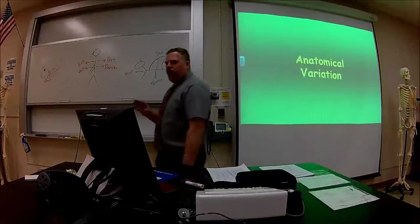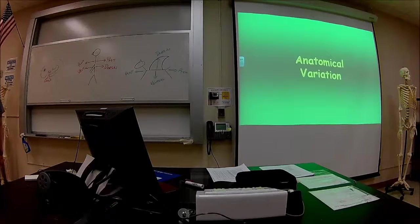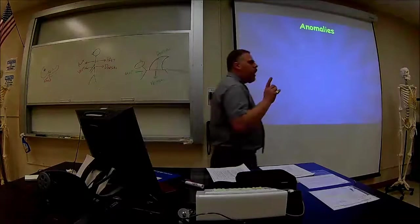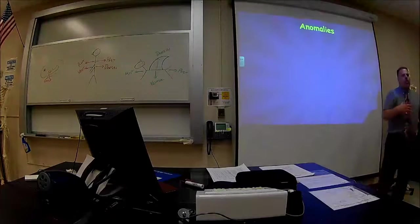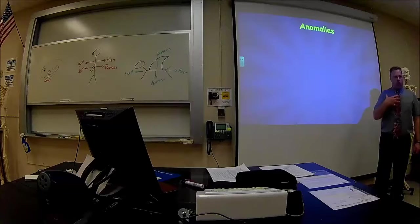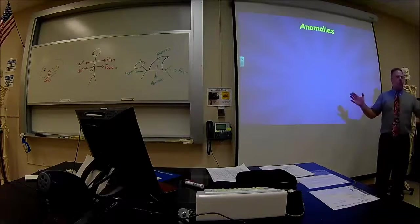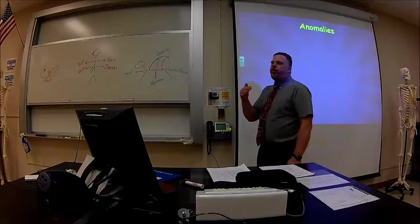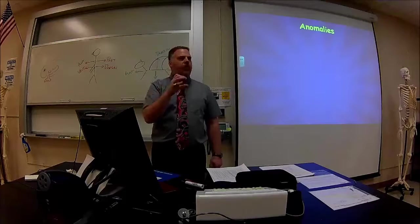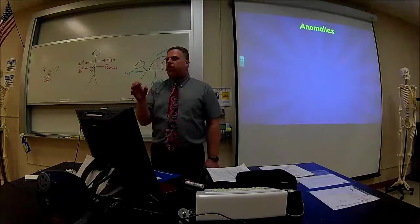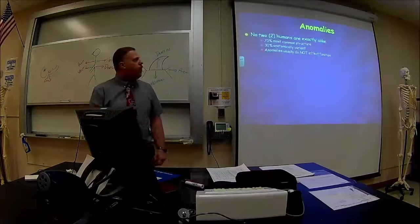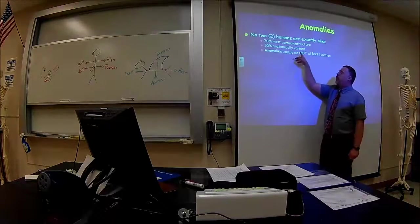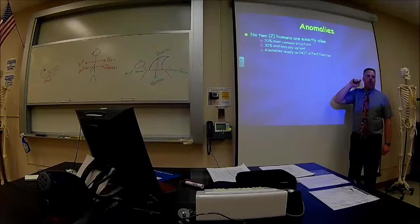The last thing is anatomical variation. Not everybody is the same and we call these anomalies, not abnormalities. Anomalies is that anatomically they're different but physiologically you wouldn't even recognize it. Seventy percent of people all have normal anatomy. You could have thirty percent having it different but are completely normal. There's a variant - anatomical variant - these are anomalies and usually do not affect function.